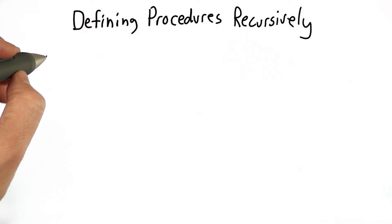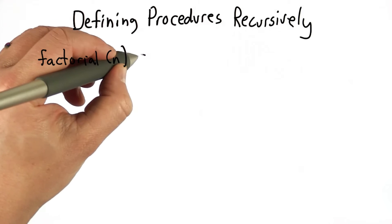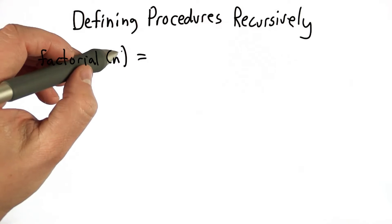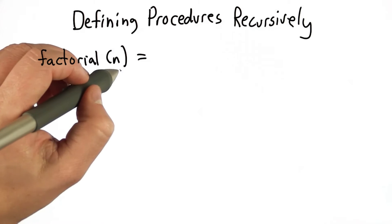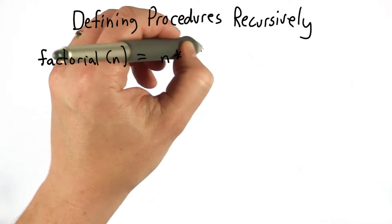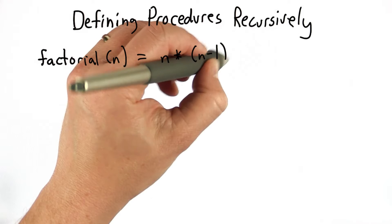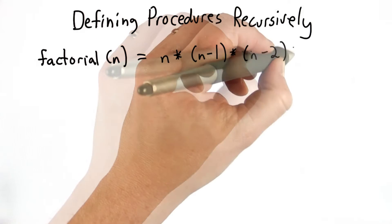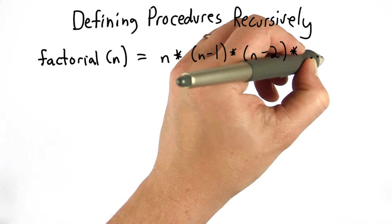And we're going to start with the procedure that we already defined in unit 2. We defined the factorial procedure, and we defined factorial as the number of ways that we can order n items, and the input is the number n, and that can be calculated by multiplying n times n minus 1 times n minus 2, and so on, until we get down to the 1.